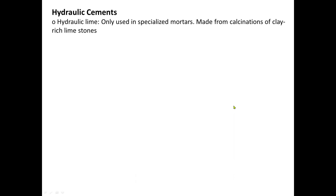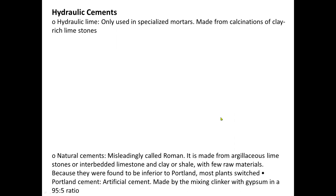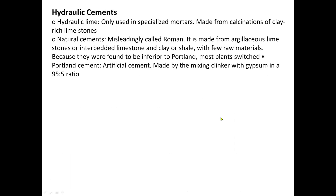Hydraulic cements include the following types. First, hydraulic lime, only used in specialized mortars, made from calcination of clay-rich limestones. Natural cements, misleadingly called Roman cement, are made from argillaceous limestones or interbedded limestone and clay, with pure raw materials. Because they were found to be inferior to Portland cement, most plants have since closed.